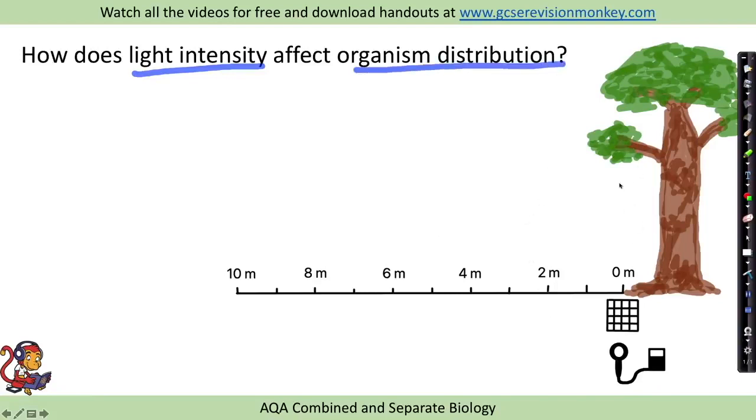So let's take this example in terms of seeing how light intensity affects organism distribution. So under the tree, the organisms will be subject to more shade than further away from the tree. So we can sample the organisms at regular intervals and see how the light intensity affects their distribution.